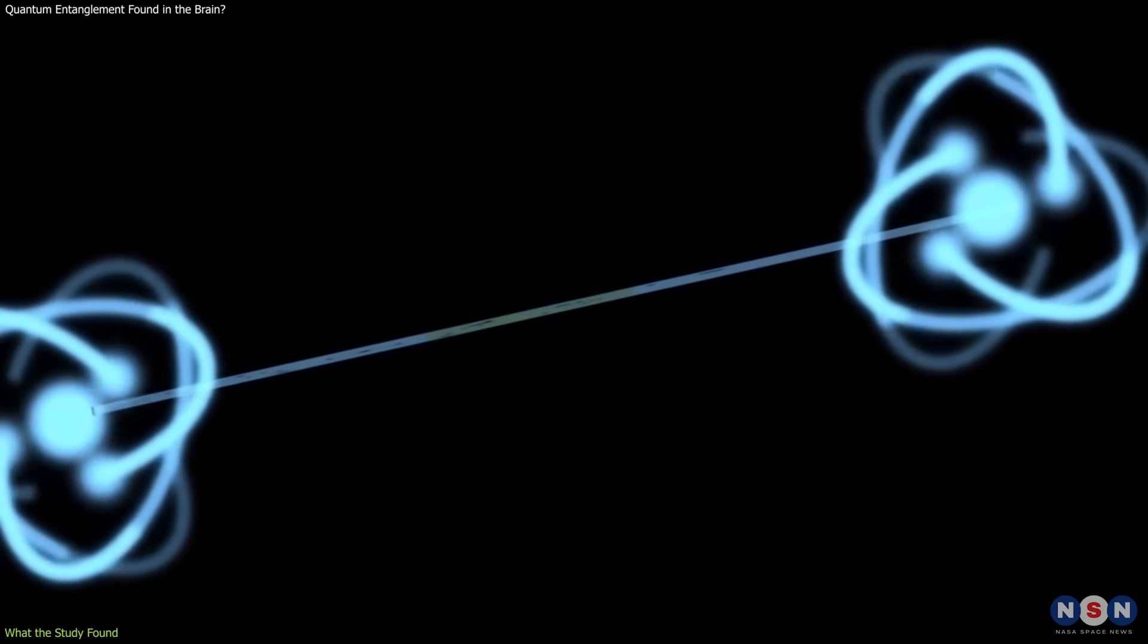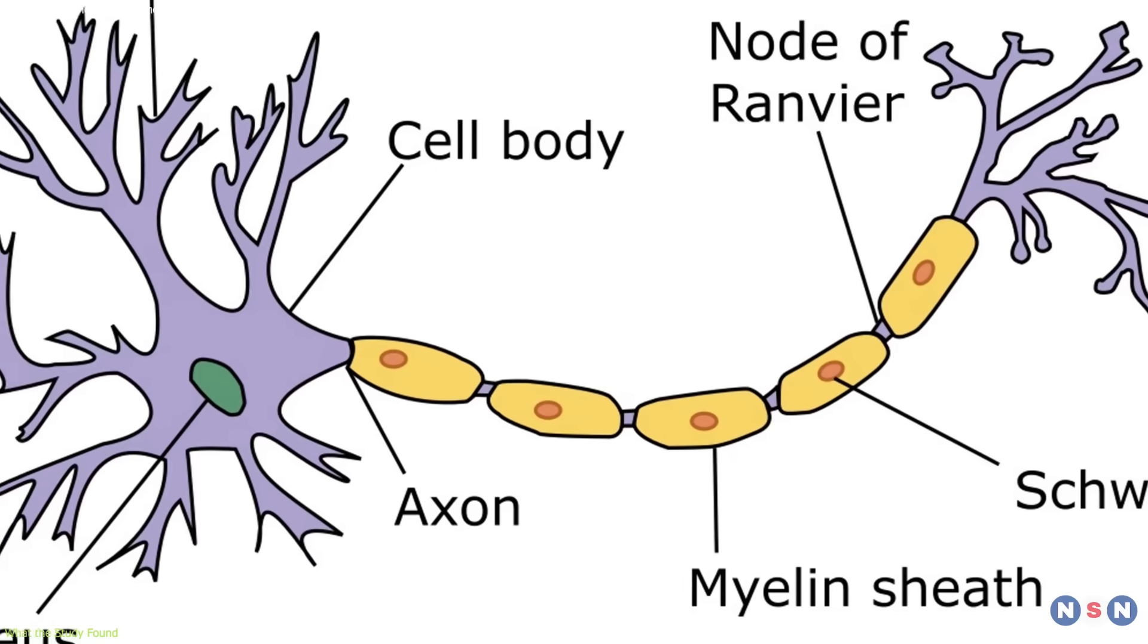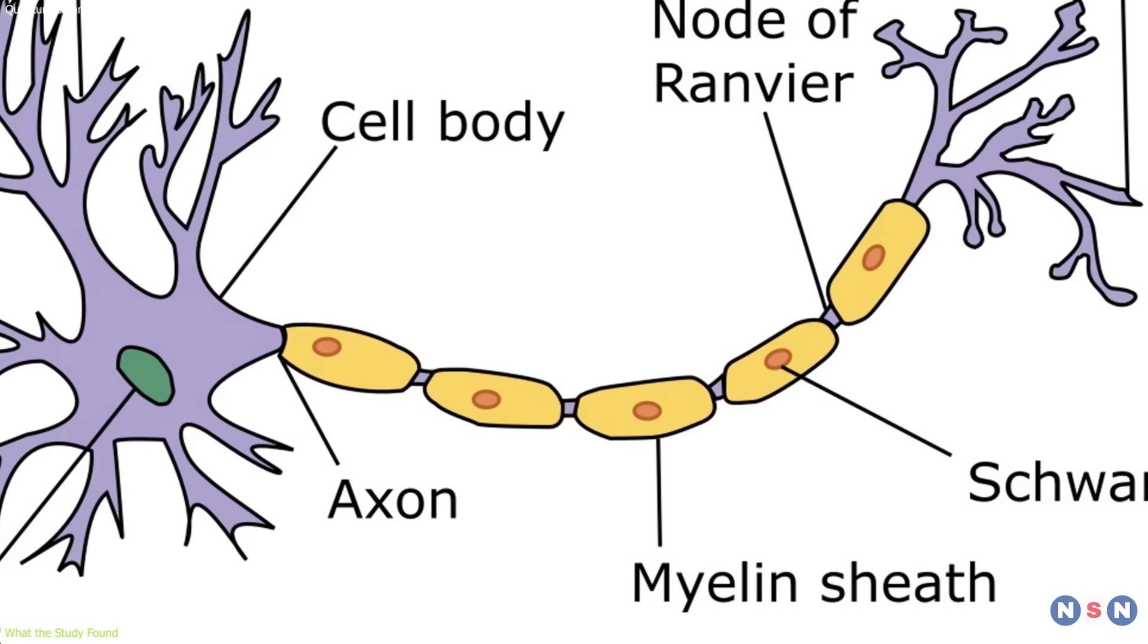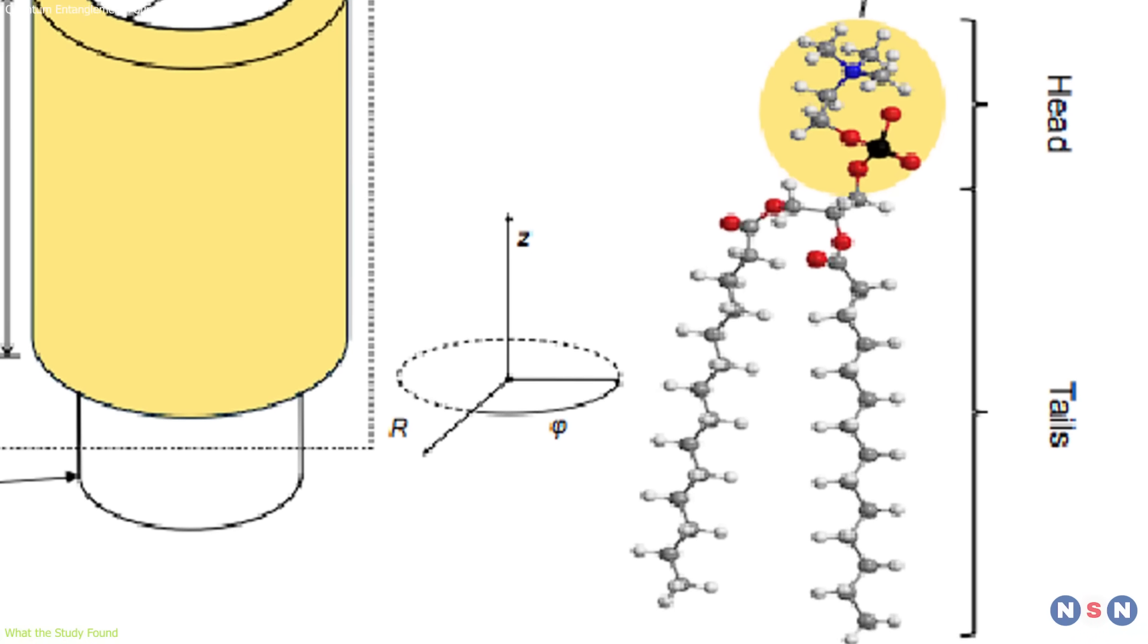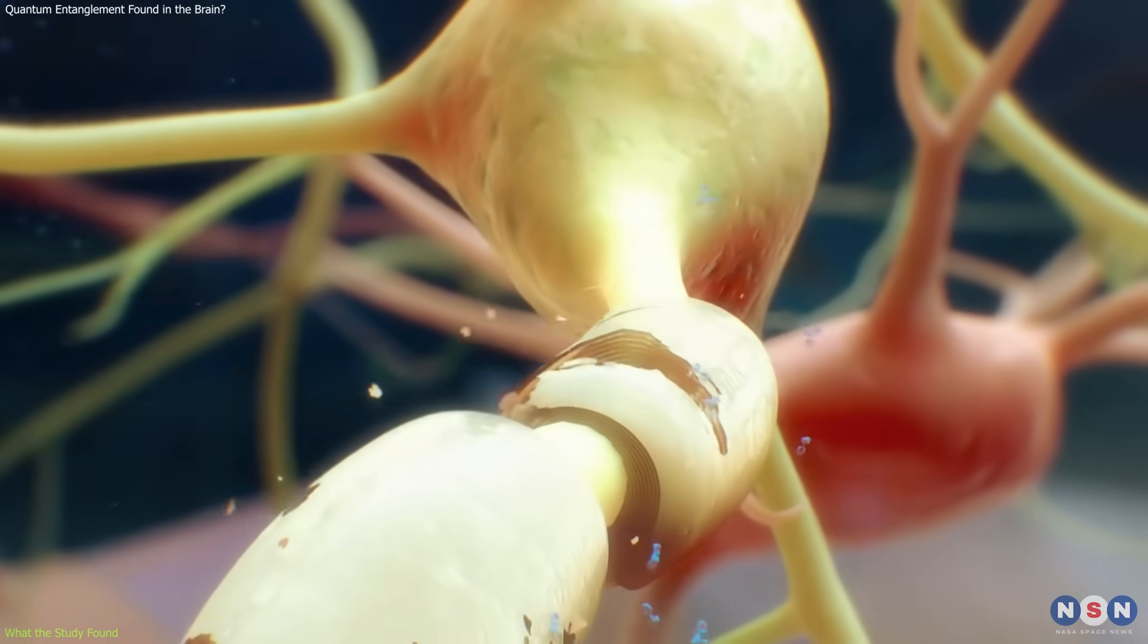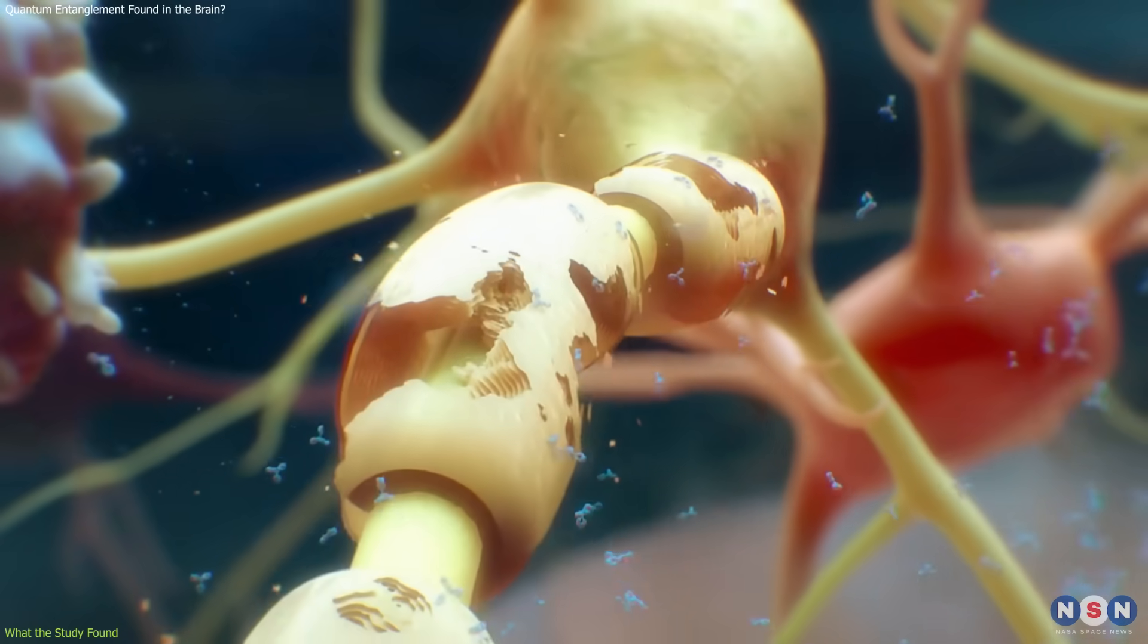The myelin sheath, which wraps around neurons, contains carbon-hydrogen C-H bonds. These bonds can undergo thermal vibrations, especially during active brain states.